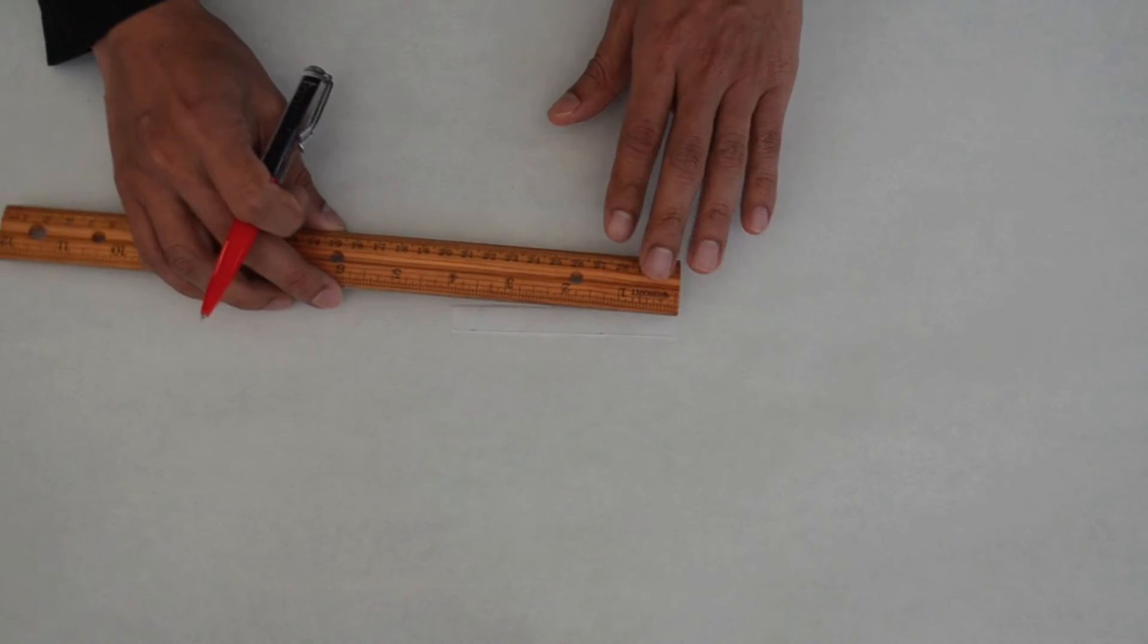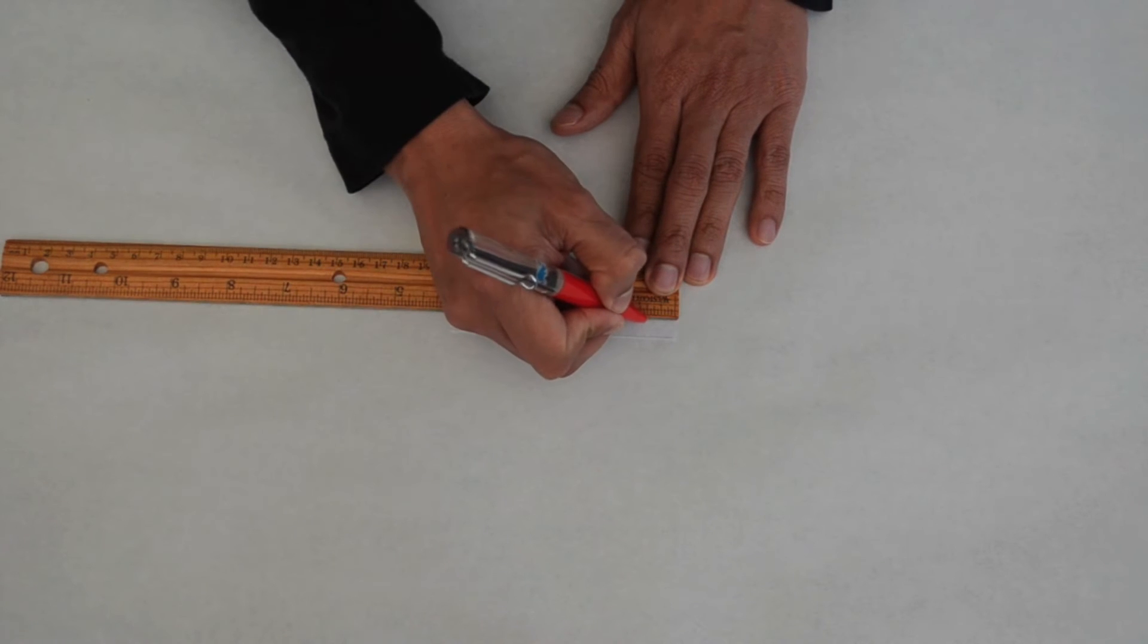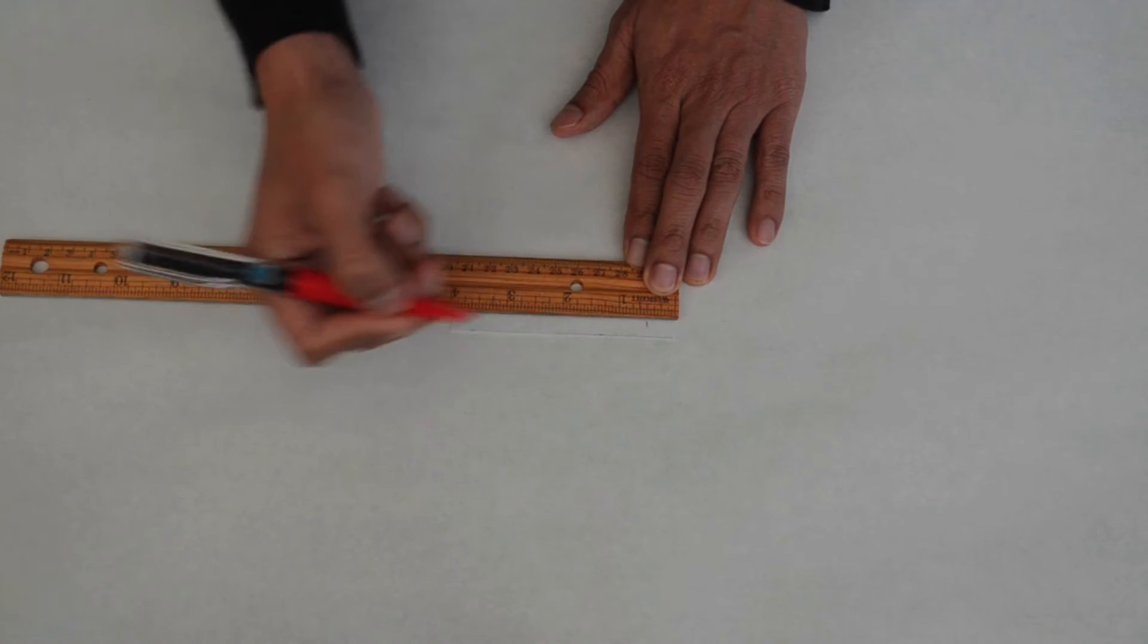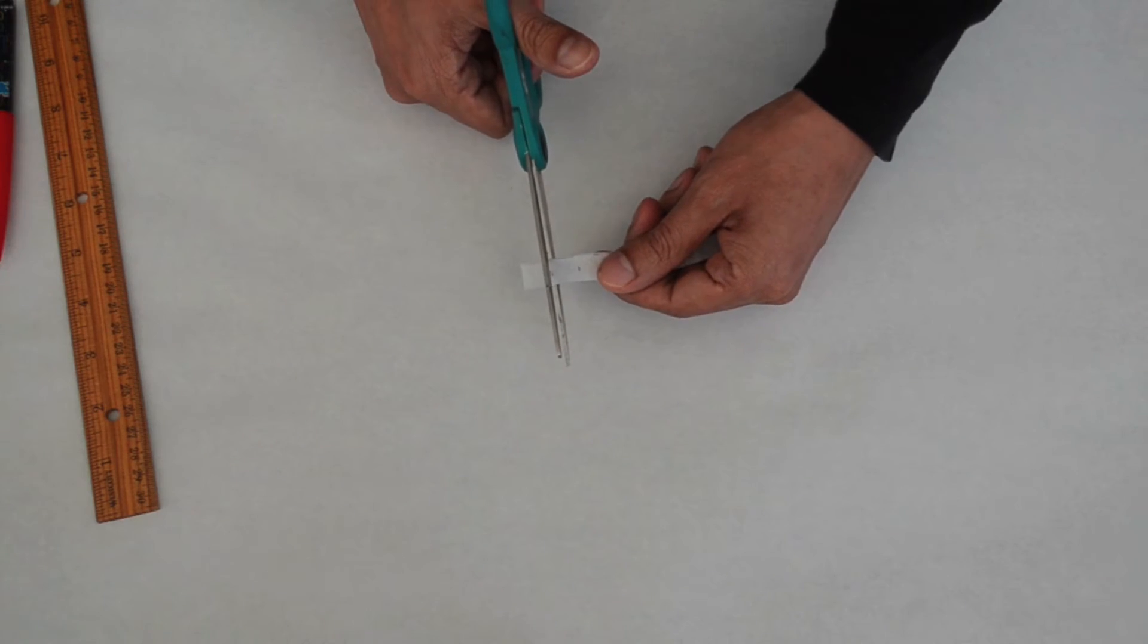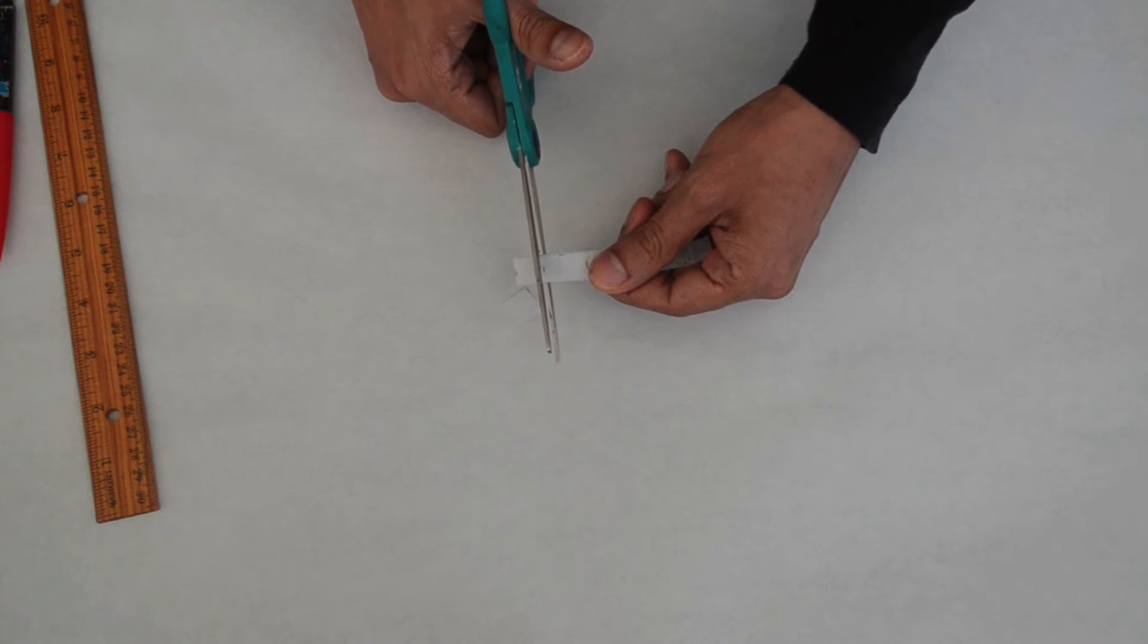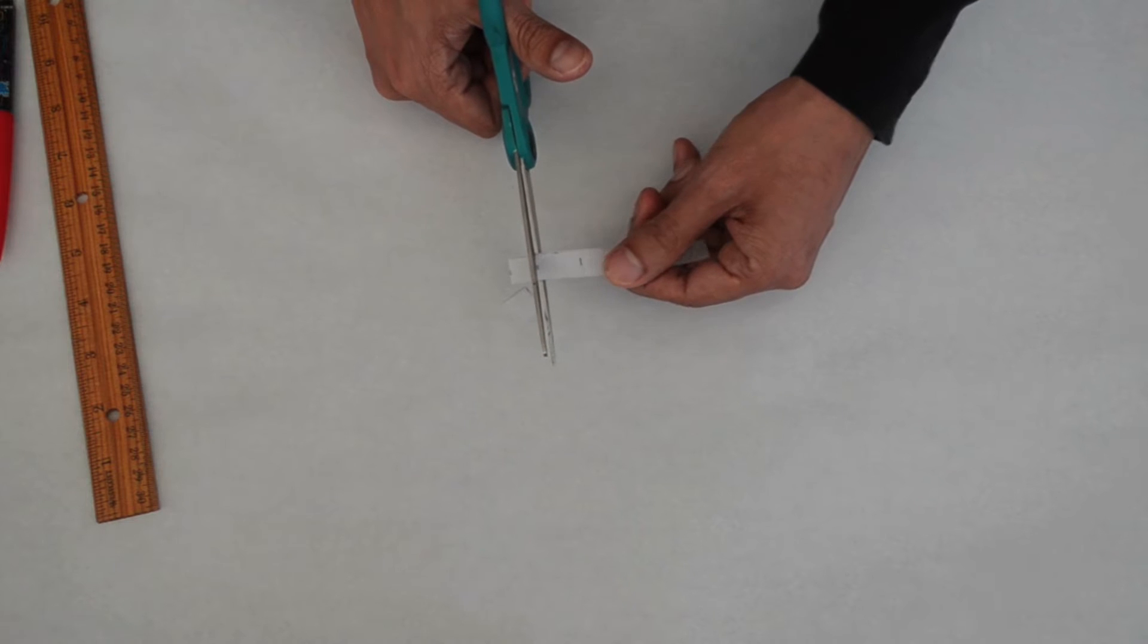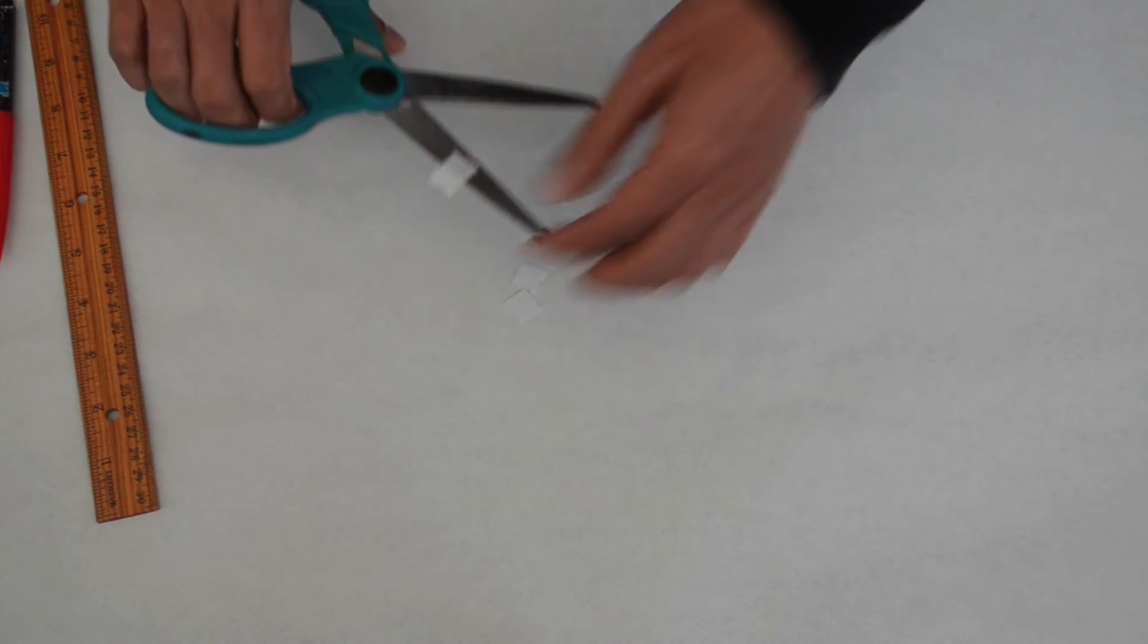Place the remaining segment of fabric in a landscape position and mark it from one edge at each of these measurement points: half an inch, one inch, and one and three fourths of an inch. Cut the fabric segment at each of these marks. You should now have just over two inches left. We will be using this leftover piece later on. We will only need the first three cuts for now.